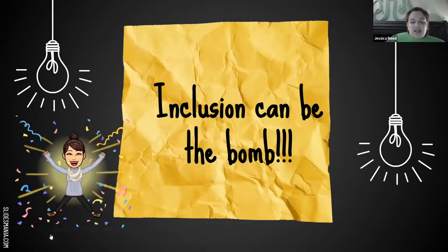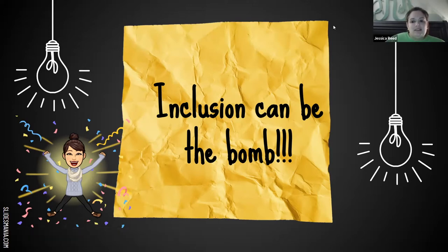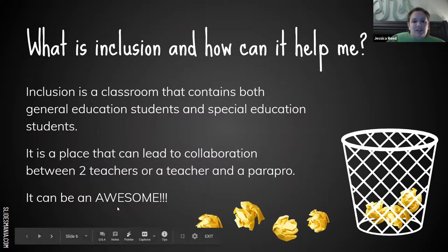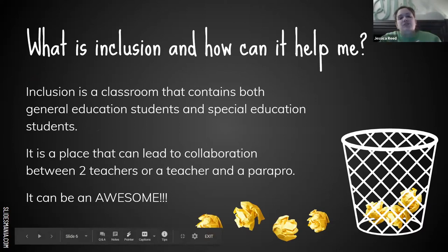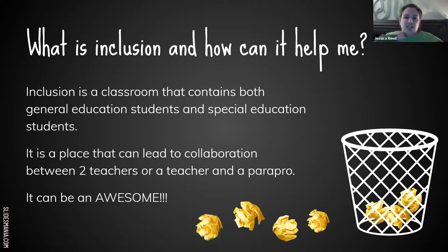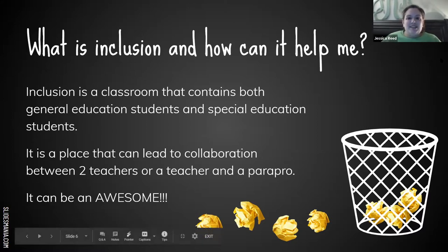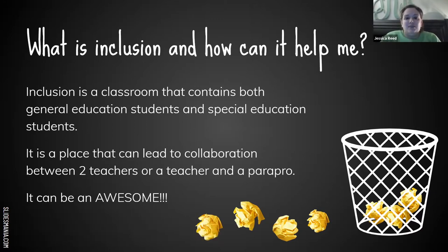Inclusion can be the bomb — it's one of my favorite things. Just because a student has a label does not mean they shouldn't have the same chance as a general education student. Inclusion is a classroom that contains both general ed and special education students. It leads to collaboration — whether between two teachers, a teacher and a para-pro, or a teacher's aid. It can be awesome, and it can also be not so awesome. The main purpose is to serve students, even those with disabilities, in the best way they can learn.